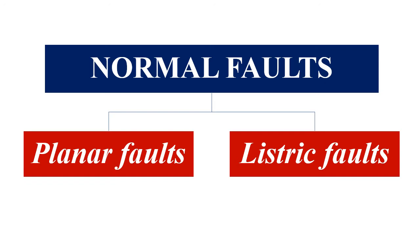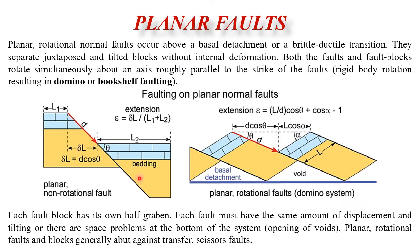There are two types of rotational normal faults: planar faults and listric faults. Planar rotational faults occur above a basal detachment or brittle-ductile transition. Both faults and fault blocks rotate simultaneously about an axis roughly parallel to the fault strike — rigid body rotation resulting in domino or bookshelf faulting. These blocks are separated or juxtaposed and tilted without internal deformation.